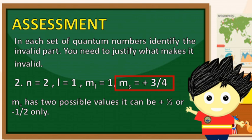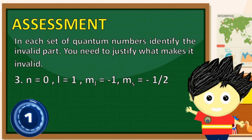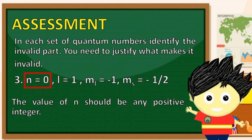Let us proceed on set number 3. n is 0, l is 1, ml is 1, and our ms is negative 1/2. Ang invalid quantum number sa set na ito ay ang value ng n o principal quantum number. Dahil tulad nga ng ating nabanggit, ang value ng n ay dapat any positive integer. Hindi pwedeng ang maging n value natin ay 0. Sana ay may natutunan ka sa video lecture na ito tungkol sa quantum numbers.